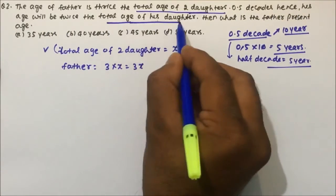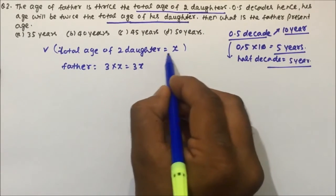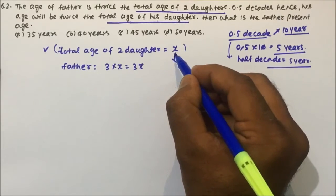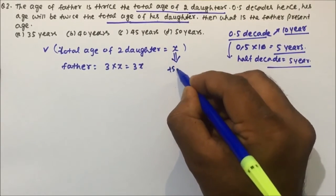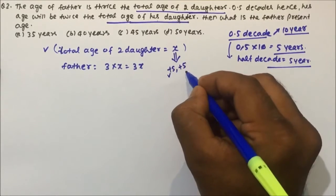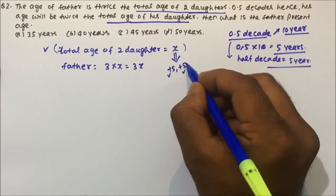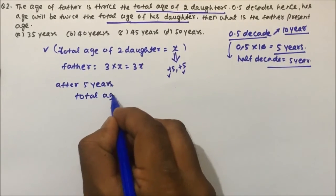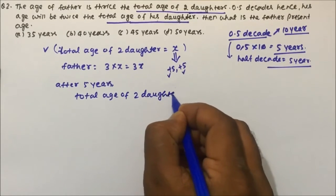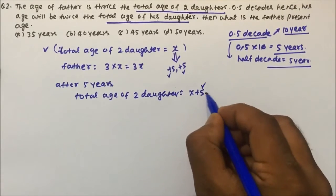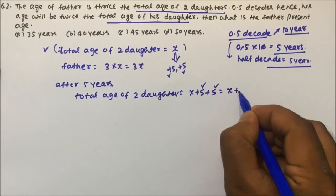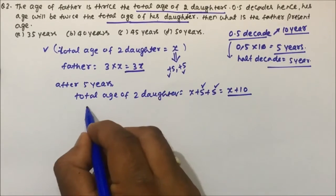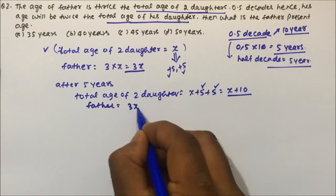The total age of two daughters is x. Five years later, for each daughter the age increases by five, and since there are two daughters that's plus five plus five, so the total age of two daughters after five years will be x plus ten. The father's age after five years will be 3x plus 5.